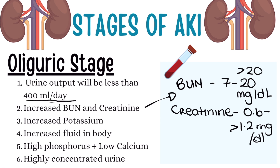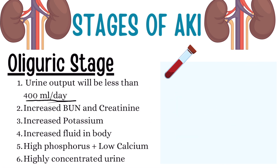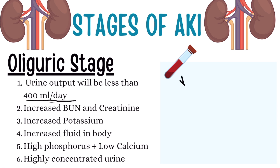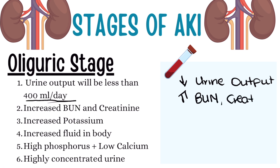Potassium is normally 3.5 to 5 mEq/L. If we see something above 5 mEq/L, we know there is an issue with the potassium. It's important to know these values because in our exams we're only going to see these values and need to understand what they mean. With oliguria, the urine output will be low — less than 400 ml per day. BUN and creatinine are going to increase, and potassium will increase as well.